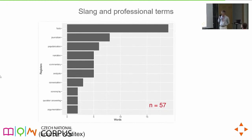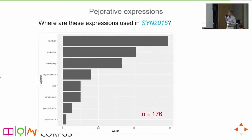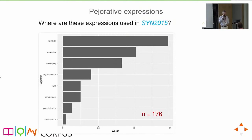Slang and professional terms — just 57 words — are mostly associated with the 'facts' register, then journalism and popularization. Not a surprise; it works and meets expectations. For pejorative expressions, I had to look at the larger corpus because there was almost nothing in the 10-million-word Coditex. Most pejorative expressions are in narration, then journalism and screenplay — again, what we would expect. But it also shows that for these parts of language, we would not have the data we'd like: even with spontaneous conversations, we do not have transcripts of, say, arguments between partners.